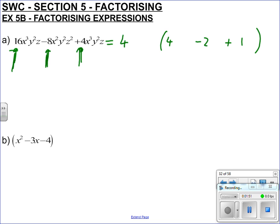Now I'll deal with the x terms. We've got x cubed, x squared, and x cubed. They haven't all got x cubed, but they have all got x squared — since x cubed is x squared times x. So I can take out x squared. What do I need to times 4x squared by to generate 16x cubed? I'd need 4x. For the minus 8x squared term, just minus 2 — no change. And for 4x cubed, I need to times 4x squared by x.